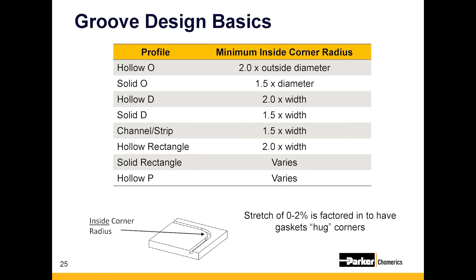Another important consideration in housing and groove design is bend radius. If you have a hollow-O and you design a 90-degree corner, that hollow-O is going to pinch. When you pinch a gasket in a groove, you're no longer maintaining the original extruded profile, which means you're probably not getting an ideal seal at that pinched point. You're also likely not getting good electrical contact, which sacrifices EMI shielding. Pinching creates both water leak points and EMI leak points.